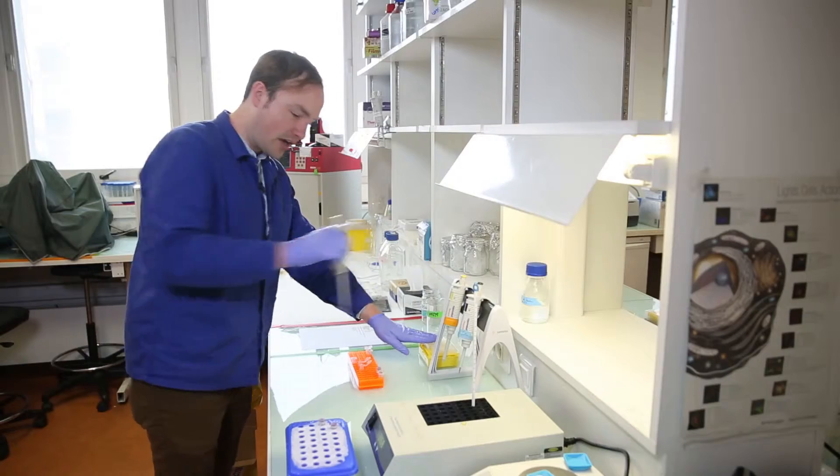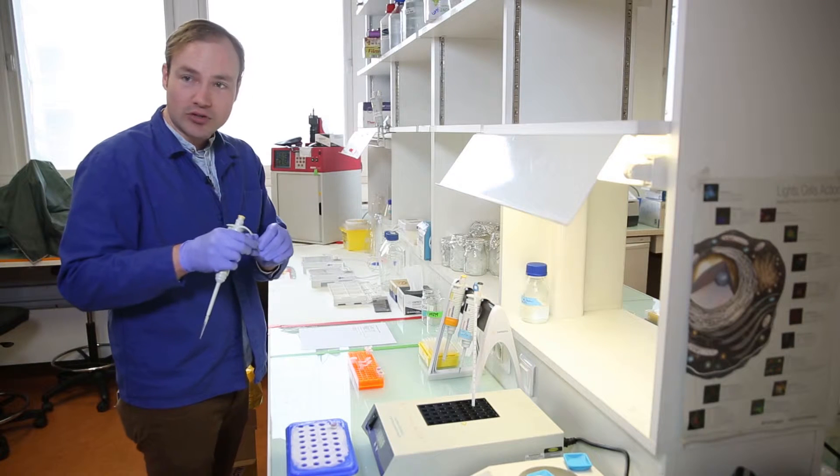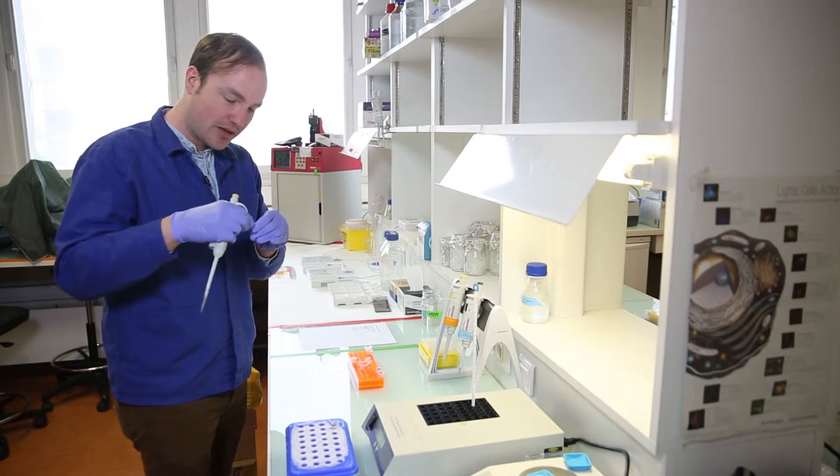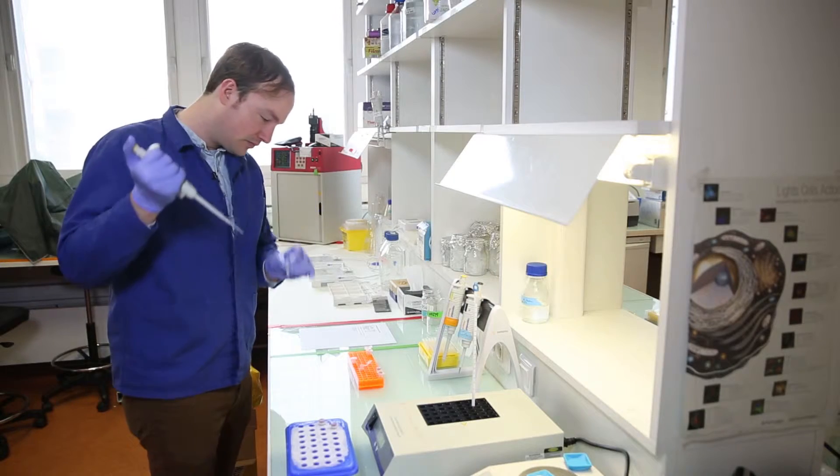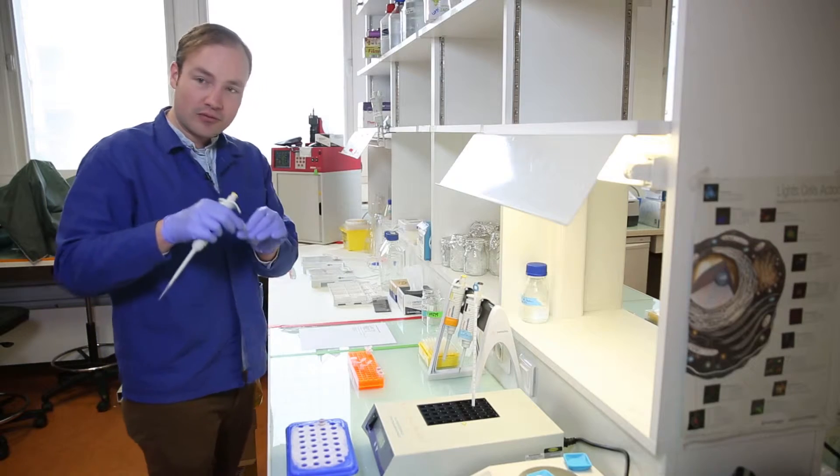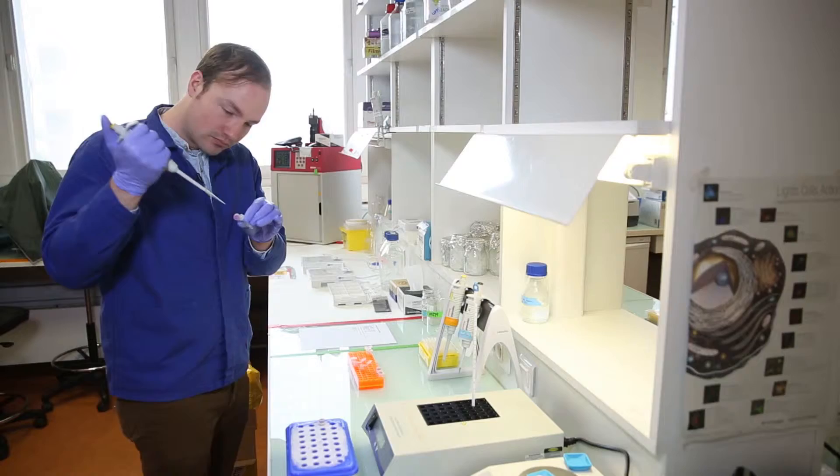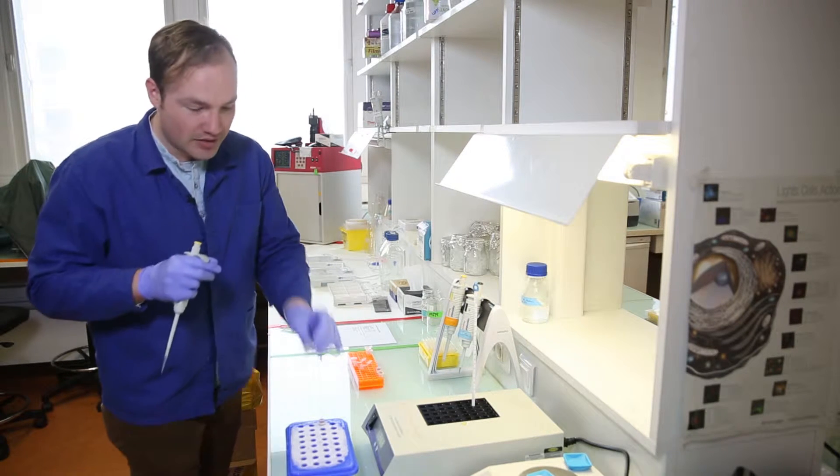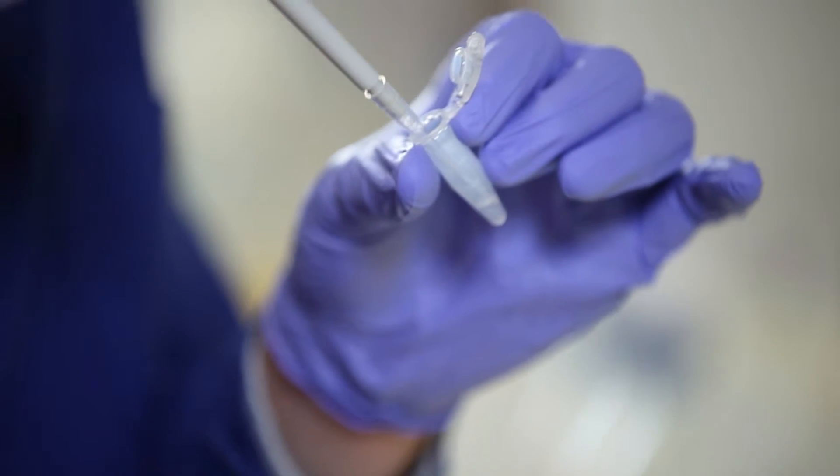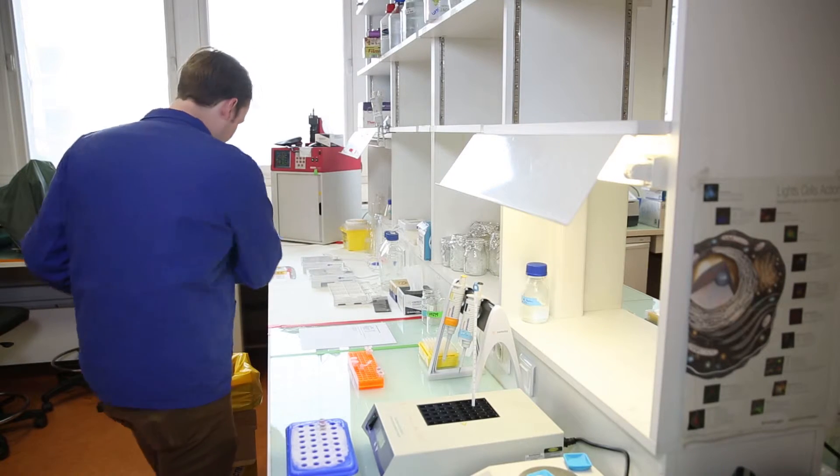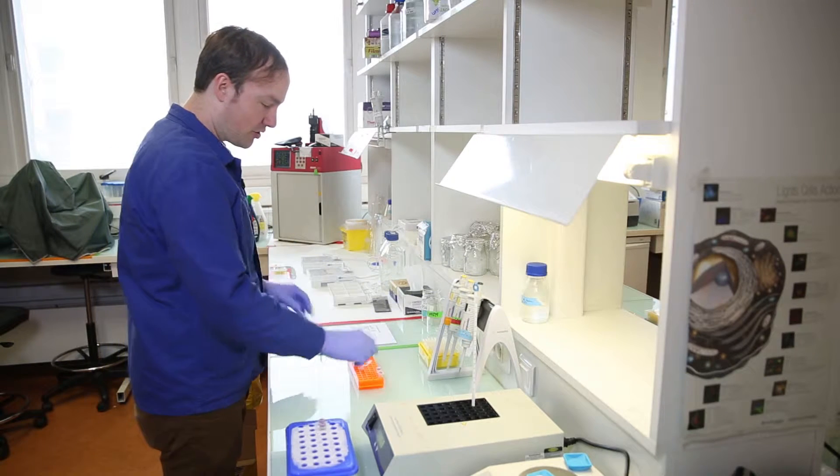The second reaction that I'm preparing will have two restriction enzymes. So again, four microliters of the first enzyme, just as before. Four microliters of the second enzyme. You'll notice that I'm changing my pipette tips after every operation so that I don't cross contaminate my enzymes.